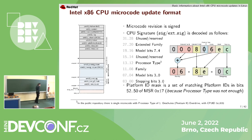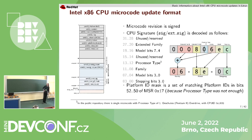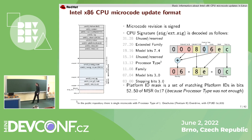The microcode update format on Intel x86 CPUs is as follows: it is prepended by a 48-byte header, then it contains the encrypted microcode update data itself. It can also have extended signature data after the main data, which — even though it has been described for about 15 years — only started to be used with Ice Lake CPUs and some latest Atom CPUs, to describe additional signatures that the microcode update is applicable for.